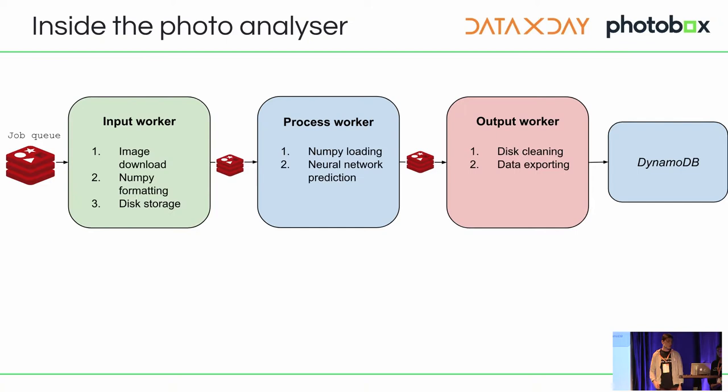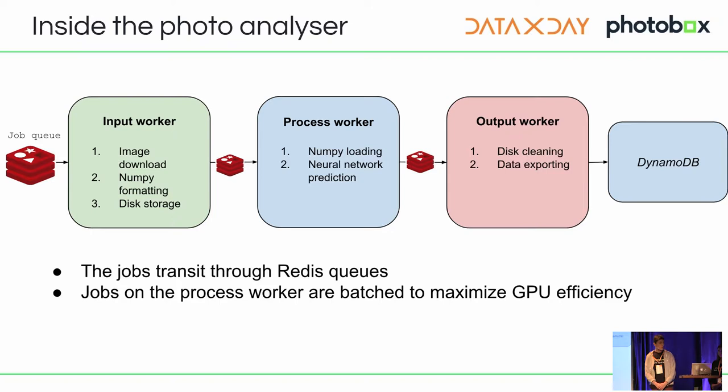A few things to notice: we use a simple Redis queue system. What we really want to achieve is to optimize our GPU efficiency. The process worker runs on GPU for fast neural network prediction — this is the key component we want to optimize. For those who don't know, there is an optimized batch size — a number of images you can put into the GPU so that it runs faster per image.